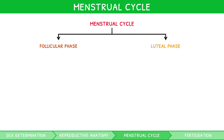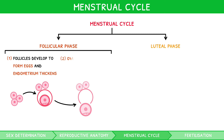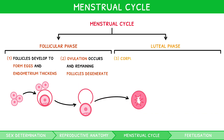You must recall the changes that occur in each stage in detail. During the follicular phase, egg precursor cells within the ovary, named follicles, develop to form eggs. At the same time, there is thickening of the endometrium. Then, at the junction between the follicular and luteal phases, the most mature egg cell is released from its follicle in the ovary, known as ovulation. The remaining follicles degenerate. During the luteal phase, the follicle which released the egg forms a structure known as the corpus luteum. There is continued thickening of the endometrium.